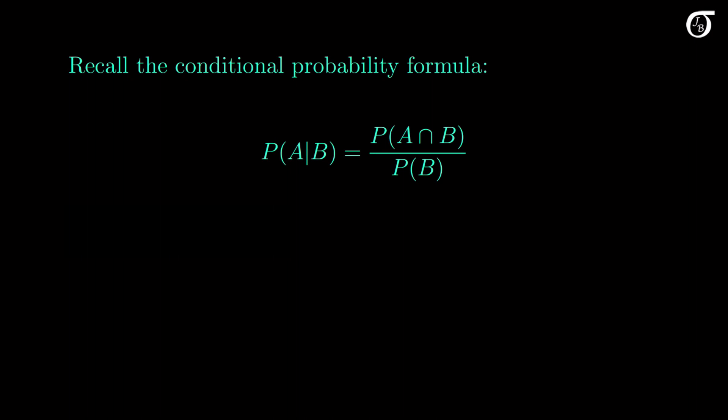Recall the conditional probability formula, where the probability of event A given that event B occurs is equal to the probability of the intersection of the two events divided by the probability of event B, the event we are conditioning on. This conditional probability is only defined if the probability of B is non-zero.